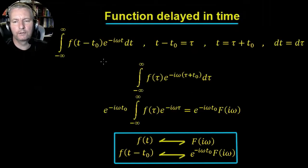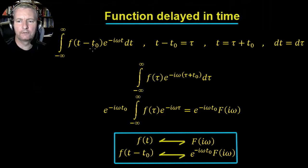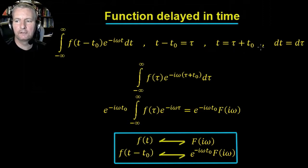First we'll look at it in terms of a function delayed in time, then in terms of a function delayed in frequency. We have our function f(t - t0) and we find the Fourier transform of it — the integral from minus infinity to infinity of our function times e to the minus i·omega·t by dt. We use substitution: let t minus t0 equal tau, so t equals tau plus t0, and therefore dt equals d·tau because t0 is just a scalar value.